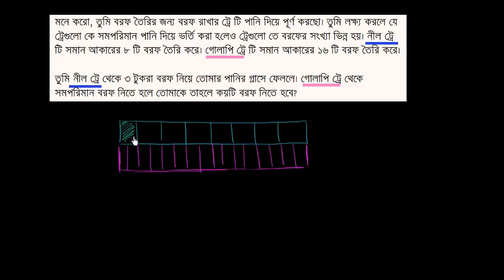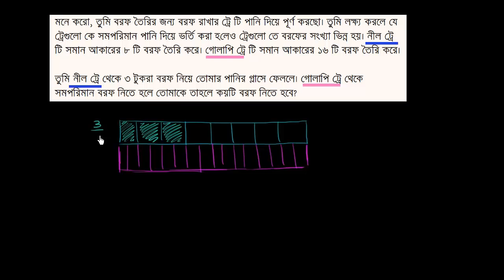এটা করা যাক তা হলে 1, 2, 3 টুকরা বরুফ তোমার পানি জলা সে ফেলনে। ওলা পিটারে থেকে শমা পণ্মান বরুফ নিতে হলে তোমাকে তললে করটি বরুফ নিতে হবে।